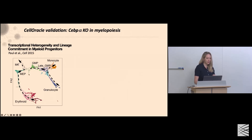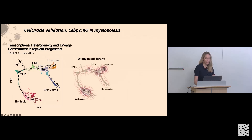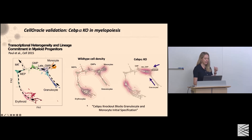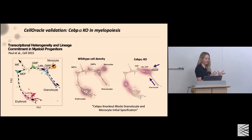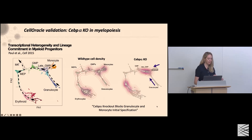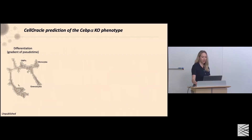We can project wild-type cell density onto this atlas. In this paper, they also had a knockout for CEBP-alpha and demonstrated that CEBP-alpha blocks granulocyte and monocyte specification from initial differentiation stages. This was a classic, rigorous knockout. Having these classic, validated knockouts was essential. When we first presented Cell Oracle with these short-range shifts in cell identity, people were struggling with their interpretation. Kenji did creative work thinking about how to rank transcription factors by degree of impact on cell phenotype, really helping users rank transcription factor knockouts systematically.